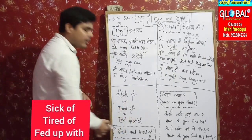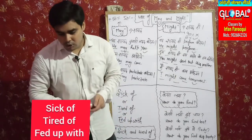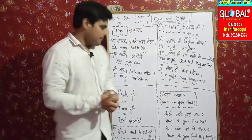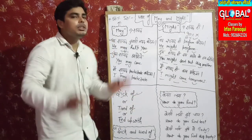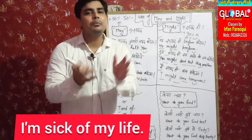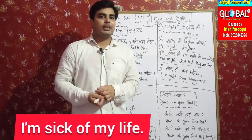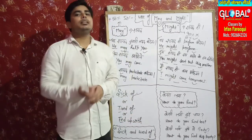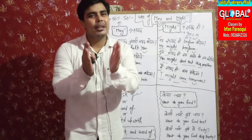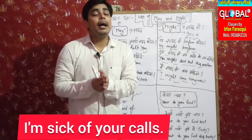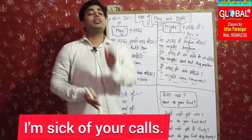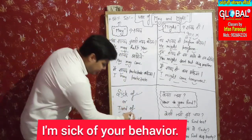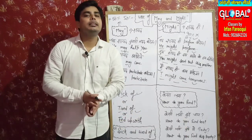Now let's talk about 'sick of,' 'tired of,' and 'fed up with.' You use these when you're fed up with something — for example, if you have many troubles in life, you say 'main tang aa gaya hoon apni zindagi se.' In English: 'I am sick of my life,' 'I am sick of your calls,' or 'I am sick of your behavior.'